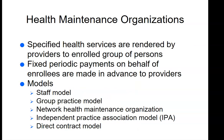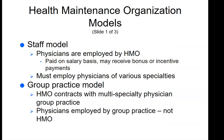Health Maintenance Organizations (HMOs) provide specified health services rendered by providers to enrolled groups of persons, with fixed periodic payments made in advance to providers on behalf of enrollees. There are several types of HMO models: the staff model, the group practice model, network health maintenance organizations, the independent practice association (IPA) model, and the direct contract model.